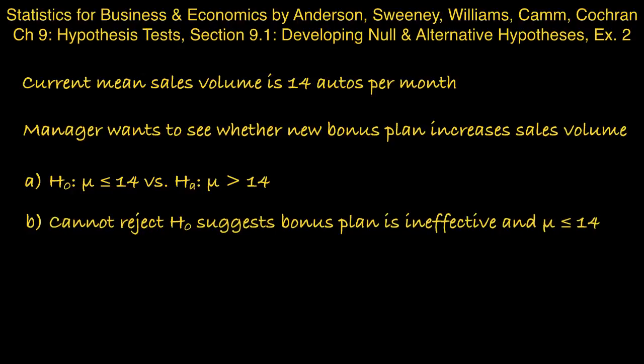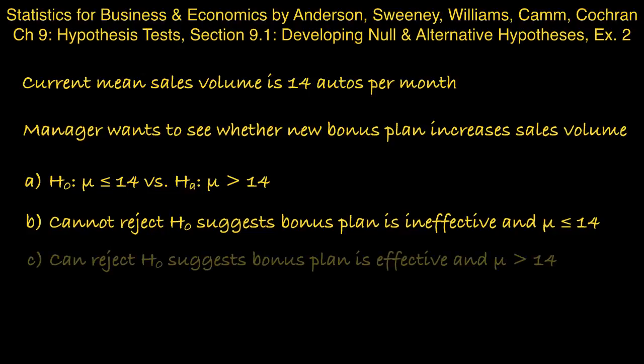Part C: comment on the conclusion when the null hypothesis can be rejected. If we are rejecting the null hypothesis in favour of the alternative, it looks like the new bonus plan is effective, and that μ is greater than 14.